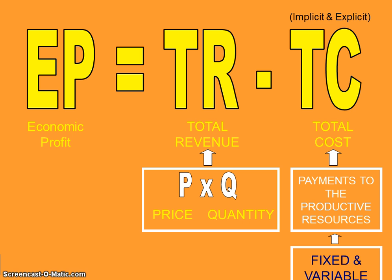Your total costs of production are going to include both implicit and explicit costs. These include the payments to all productive resources, some of which are fixed and some of which are variable. In the majority of the problems we'll do in class, the implicit costs of production have been accounted for, and you can assume that. So economic profit is profit above and beyond the implicit and explicit costs of production.